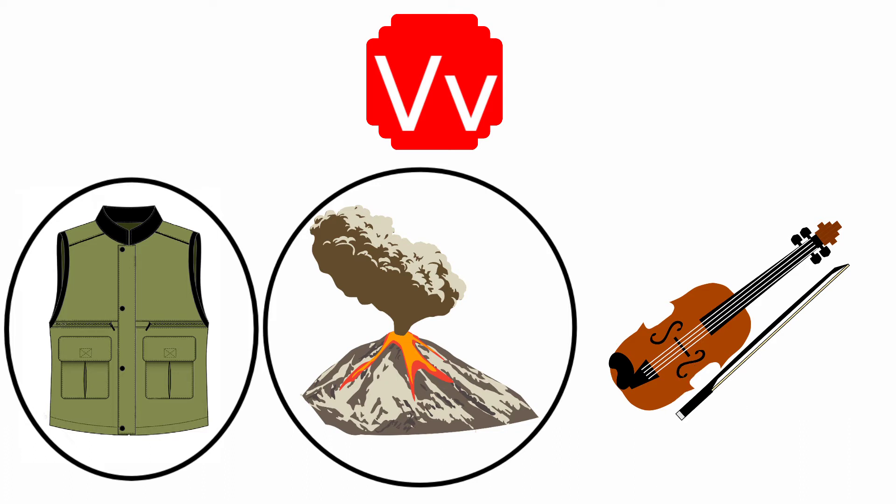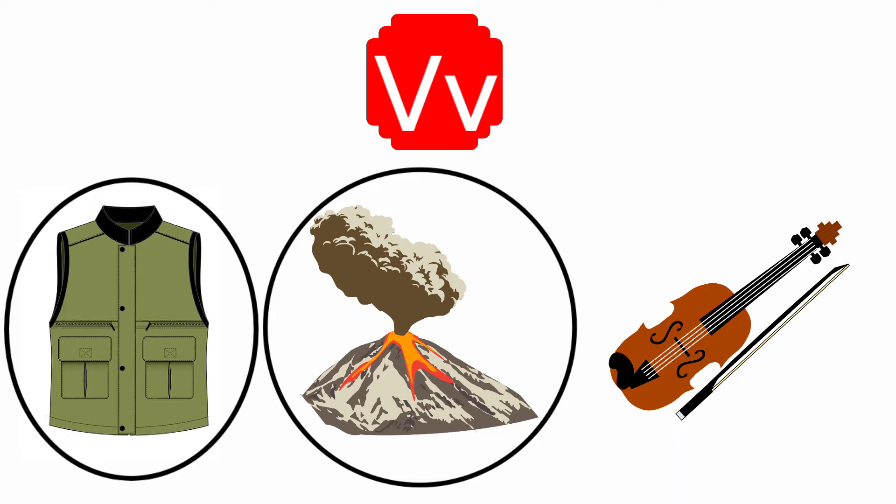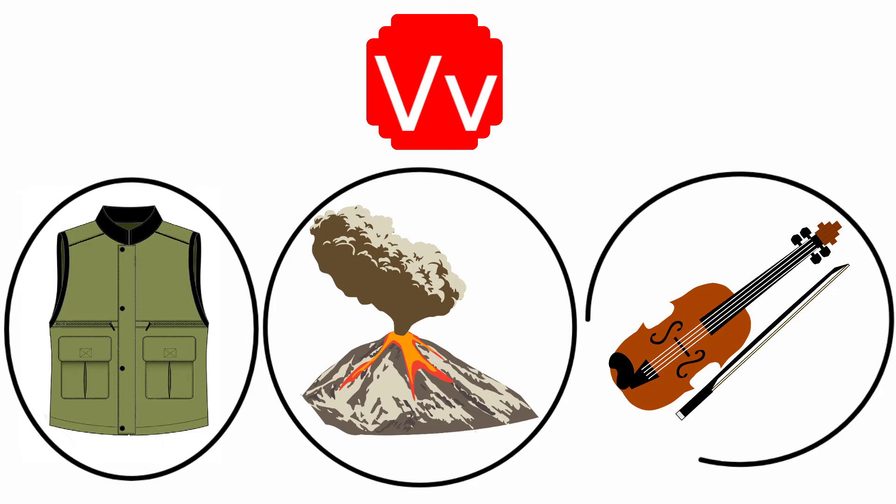Next one, Violin. The beginning sound of the picture Violin is V, and the sound of the letter V is V. The sound of the letter V and the beginning sound of the picture Violin are the same. So, we are going to circle the picture Violin.